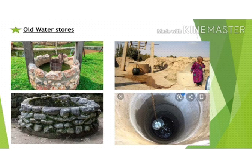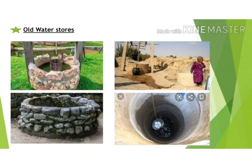These water stores are used to store or save water for various purposes. This stored water is used once the rainy season gets over — that means after September. Normally we have rainy season from June to September. Old water stores refer to the methods which were used to store water in olden days.